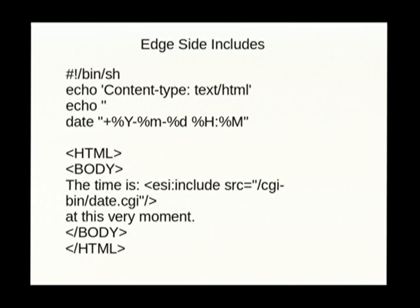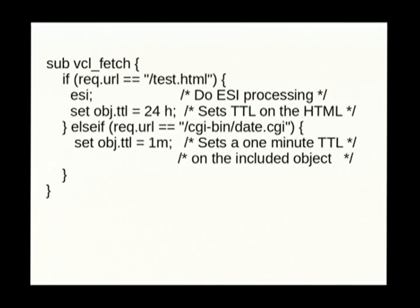Another trick is edge side includes. You saw those two objects - the comments area and the Twitter bit - that had very low expire times compared to the rest of the page. With edge side includes you take a bit of HTML like 'include ESI, include source data CGI' and pull that out as a separate URL to your back end. You construct your overall page, and in Varnish you can have the overall page with an expire time of a day and one or two tiny objects inside it with an expire time of a minute. That is a very aggressive way to fix things and it really helps your hit rate. Varnish support for ESI is pretty good right now.